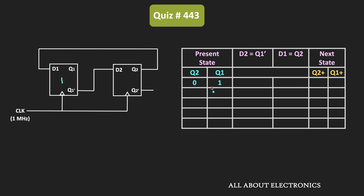Based on the initial states, let us see how the output of this sequential circuit will change. Since D2 is equal to Q1-bar, and Q1=1, D2 input will be equal to 0 for the next clock pulse. Similarly, since D1 is equal to Q2, and Q2=0, D1 will be equal to 0. For the D flip-flop, the output is the same as the input. Therefore, at the next clock pulse, Q2+ and Q1+ will both be equal to 0. This will now be the present state: Q2=0, Q1=0.